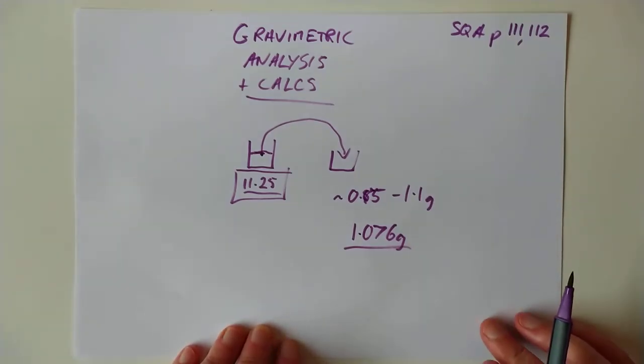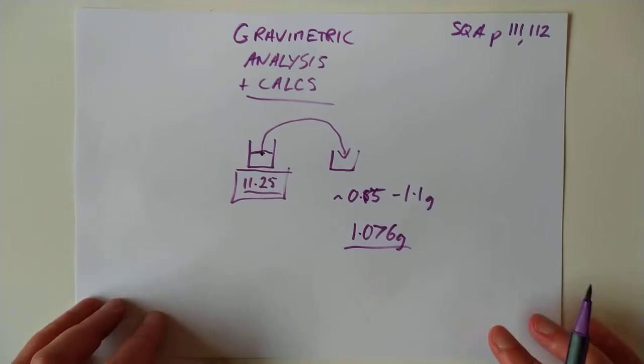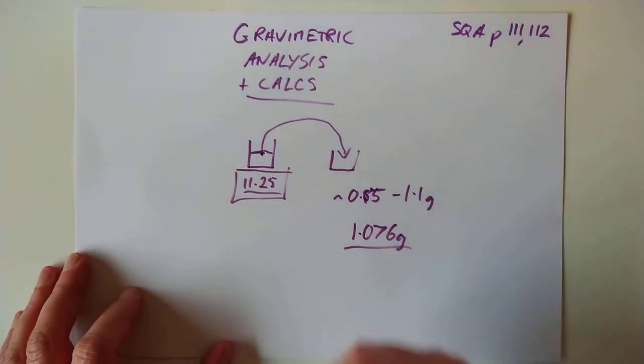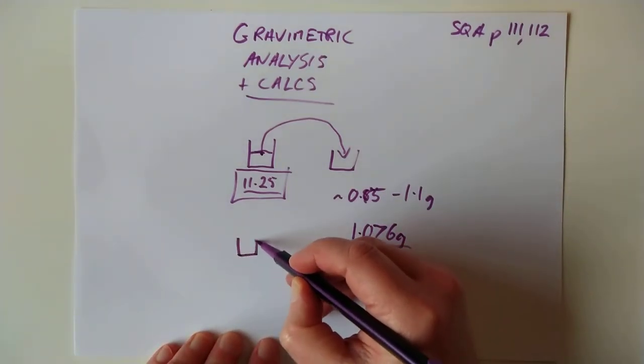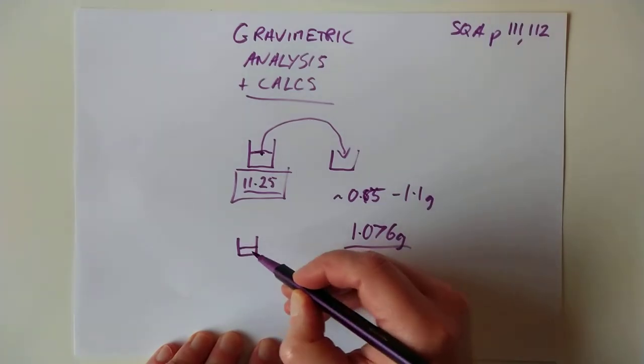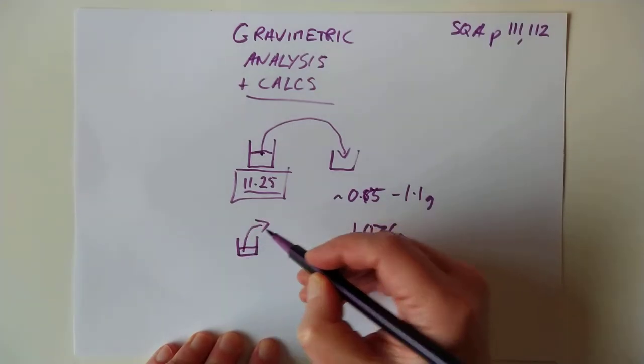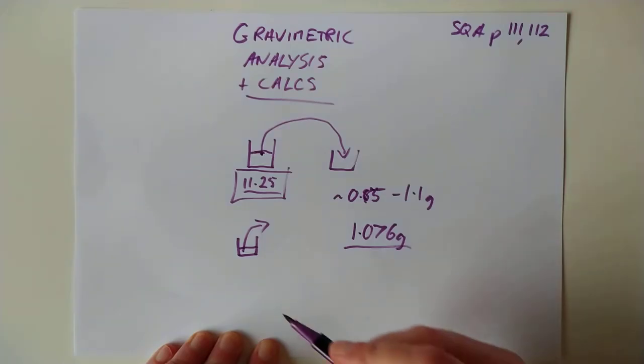They also want you to know the term heating to a constant mass. Now, this is for a gravimetric analysis method where you're blasting off water from something. In other words, you've got yourself your little crucible with, say, bath salts, for example,